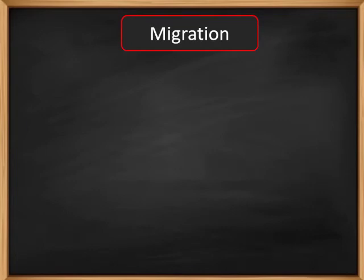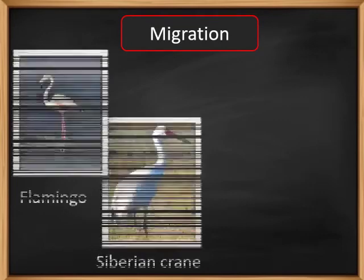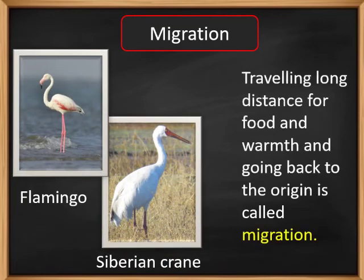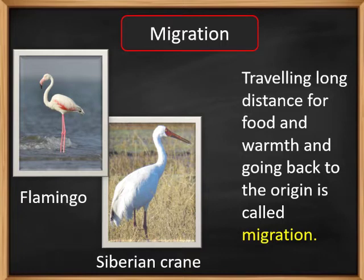Migration. What is migration? The process of traveling long distances in search of food and warmth, from one place to another and again returning back to the origin, is called migration. Mainly birds show migration. Flamingo and Siberian crane are examples of migrating birds. When there is extreme cold in the north, some birds travel towards the south, and again on the return of summer in the north, they come back from south to north.